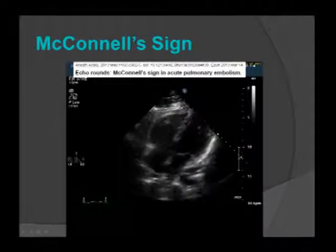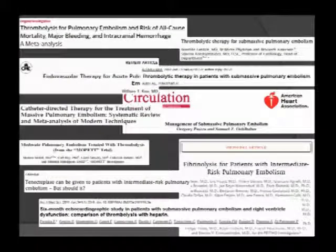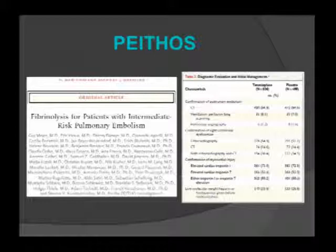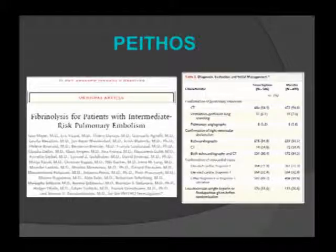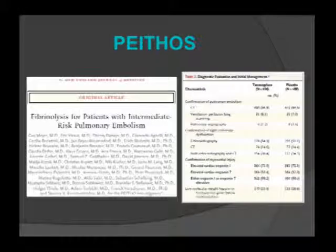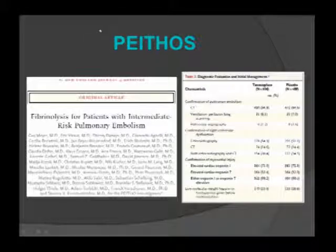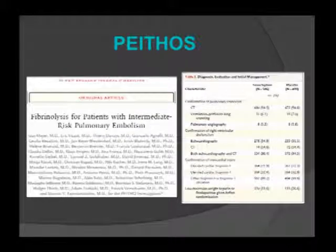Now that we've identified at-risk patients, how do we decide treatment? Until recently, we lacked a large prospective randomized control trial. This year we got the PEITHO trial — named for the goddess of seduction and persuasion, daughter of Hermes and Aphrodite. The study took 1,000 submassive PE patients: 500 received anticoagulation plus placebo, 500 received anticoagulation plus thrombolytic therapy to determine which approach yielded better outcomes.